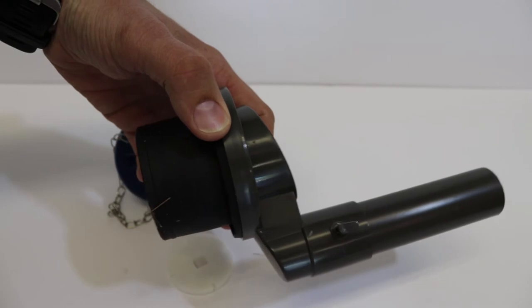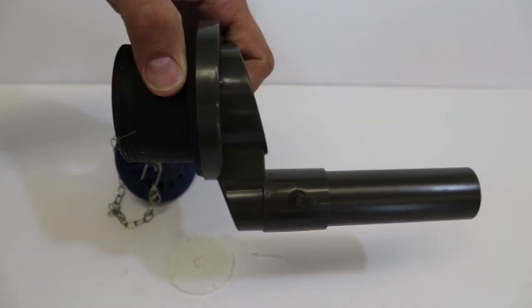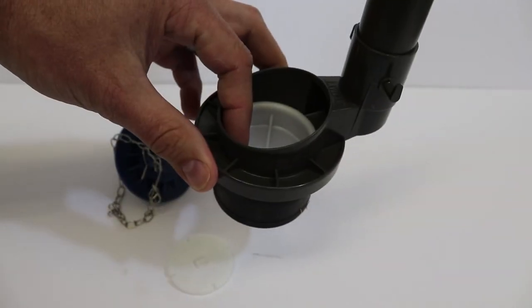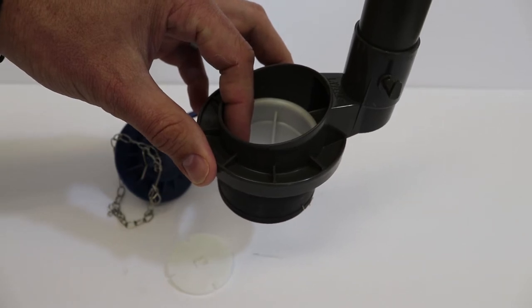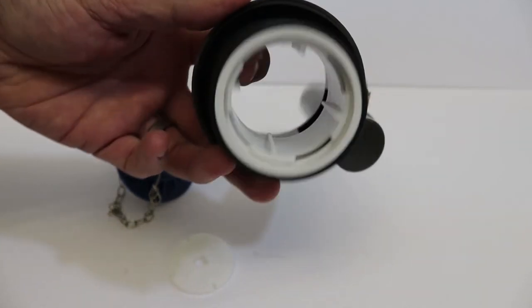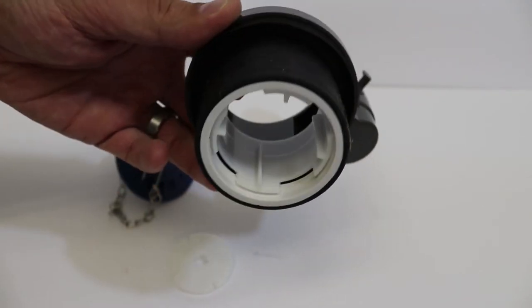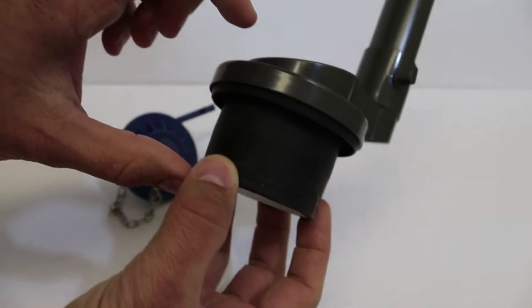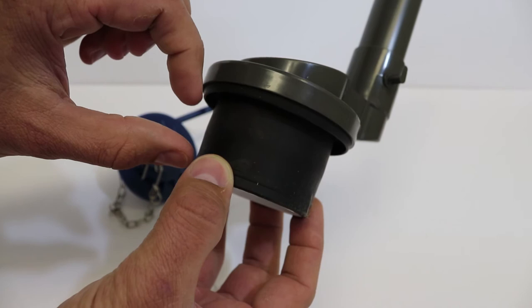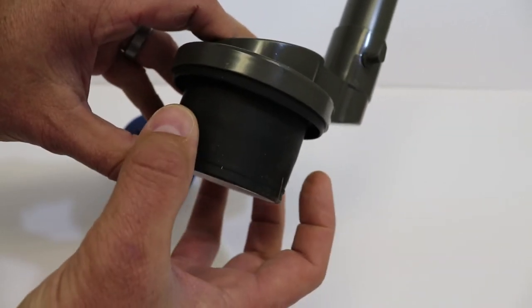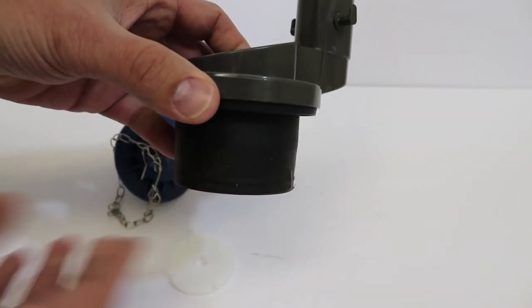So this toilet here does not have a tank and bowl that comes apart. So you can't unbolt it from the bottom side. Therefore this does have a rubber grommet that kind of squeezes together here to expand and tighten up on the inside of that china.